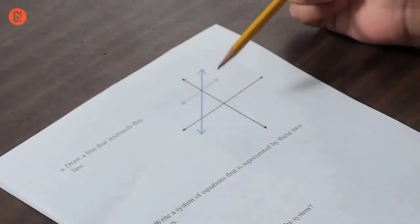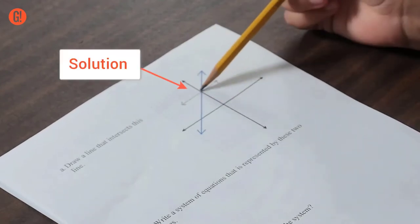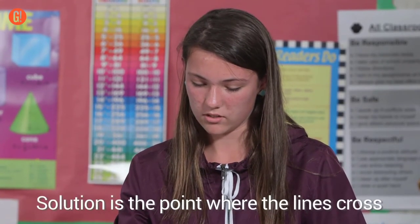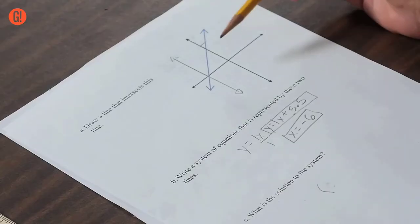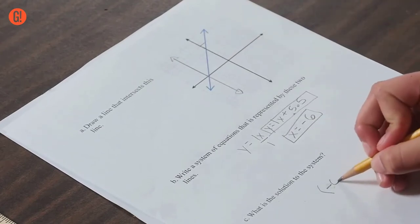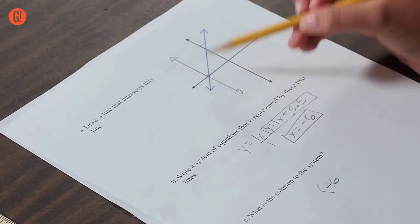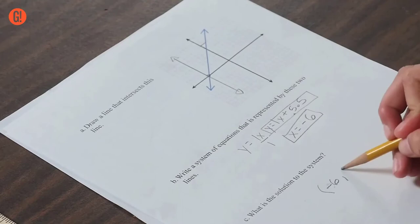Eighth graders should be able to look at a graph of two lines and know that the solution is the point where the two lines cross. So, the solution is just the point where the two lines intersect, which is negative six because this is the point where they intersect, so it would be negative six and zero.